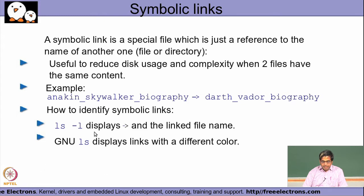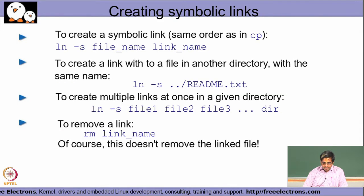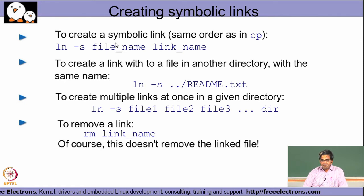Symbolic links are denoted in the ls -l output as a hyphen followed by a greater-than symbol, then the linked file name, and in the GNU ls version they are displayed in a different color. To create a symbolic link, use the ln command with the -s option, specifying first the target file name and then the link name. If no link name is given, a link with the same name is created in the current directory.